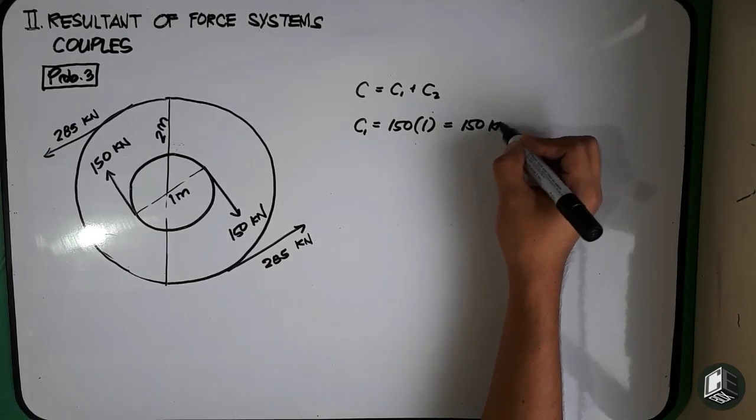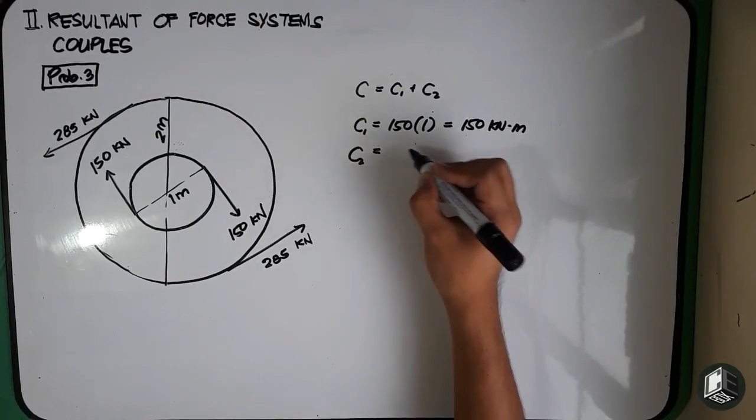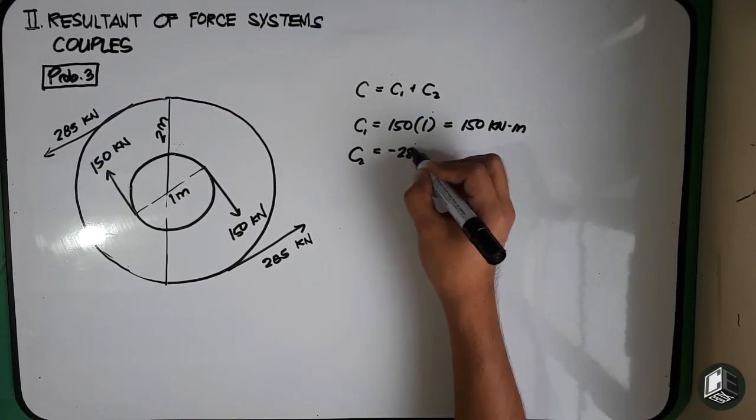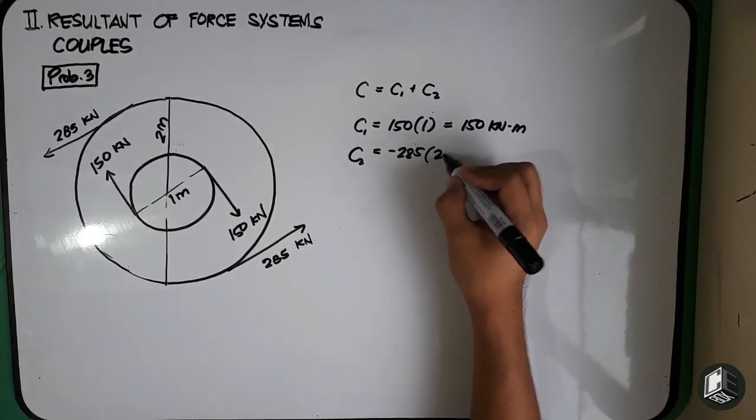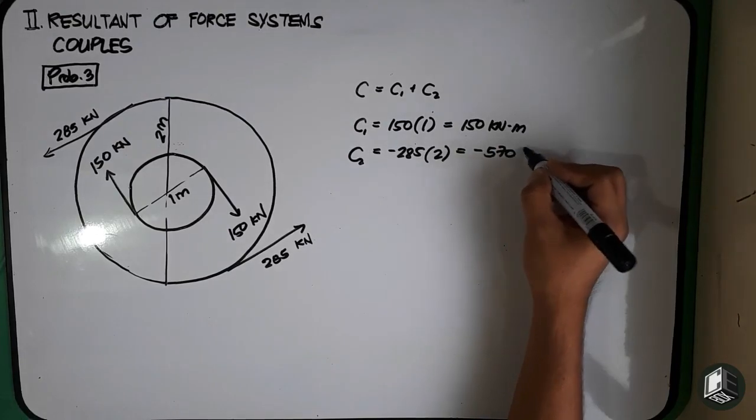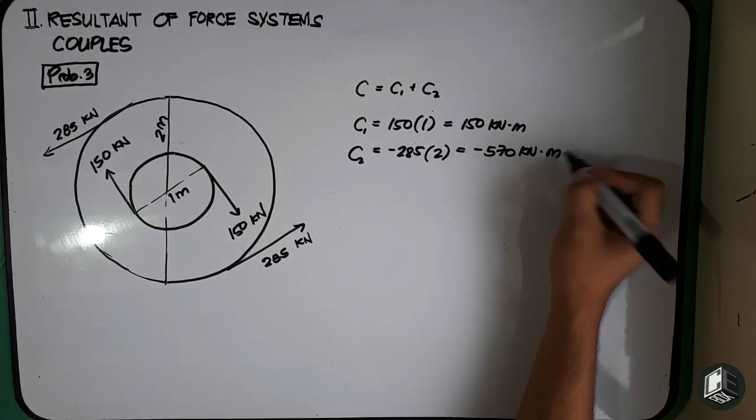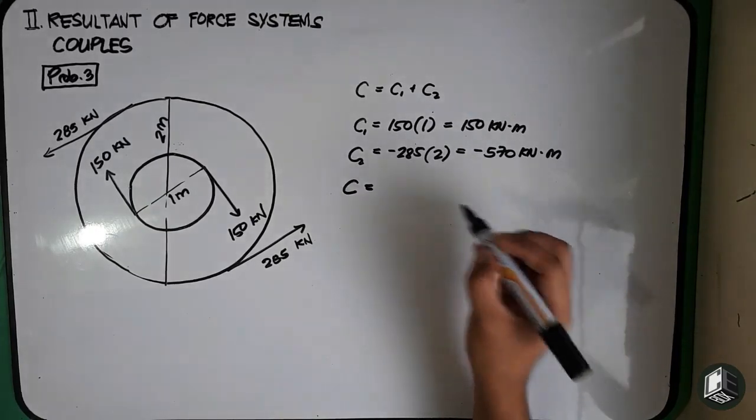And yung ating C2 is equals to negative 285, negative kasi ito ay counterclockwise, multiplied by two meters. So this is equals to negative 570 kN meter. So therefore yung ating overall couple...